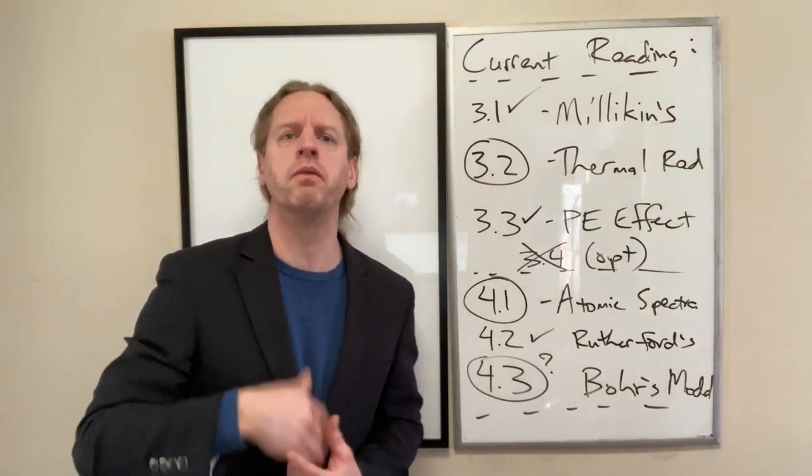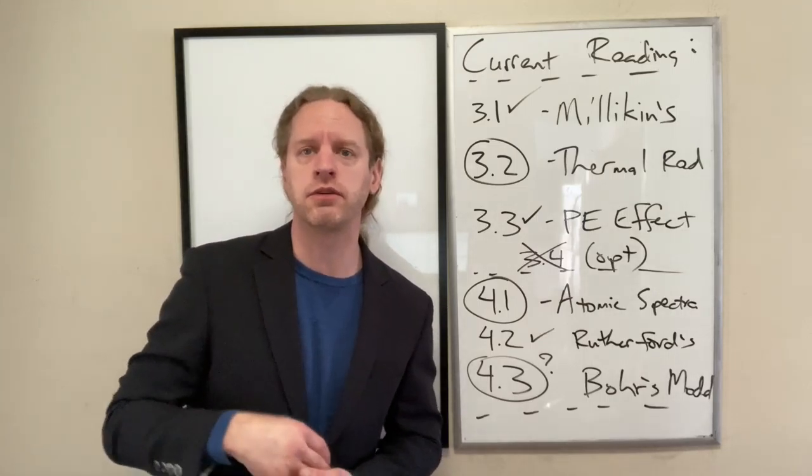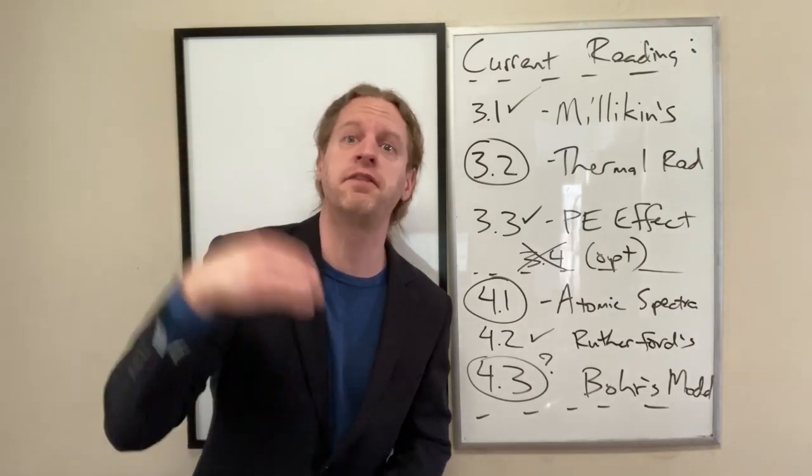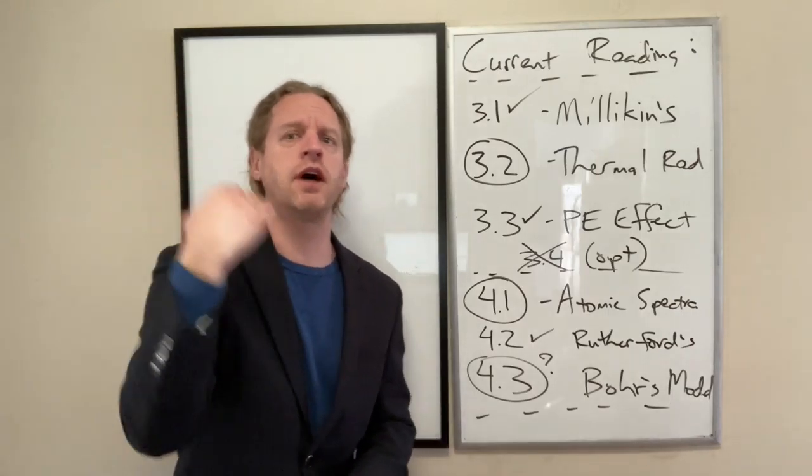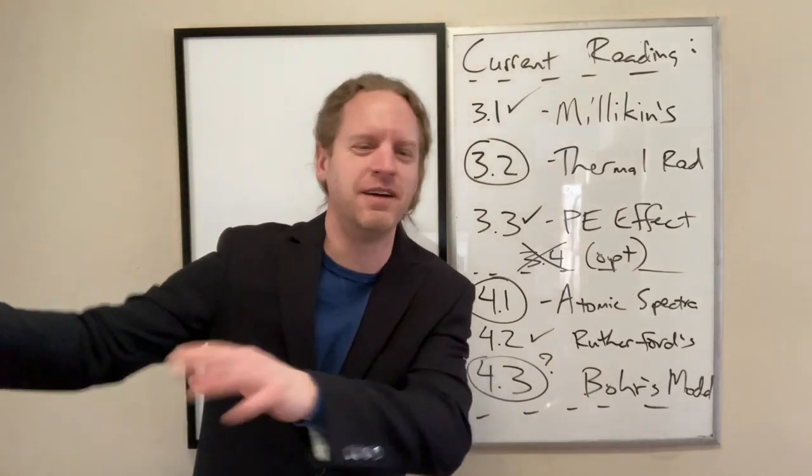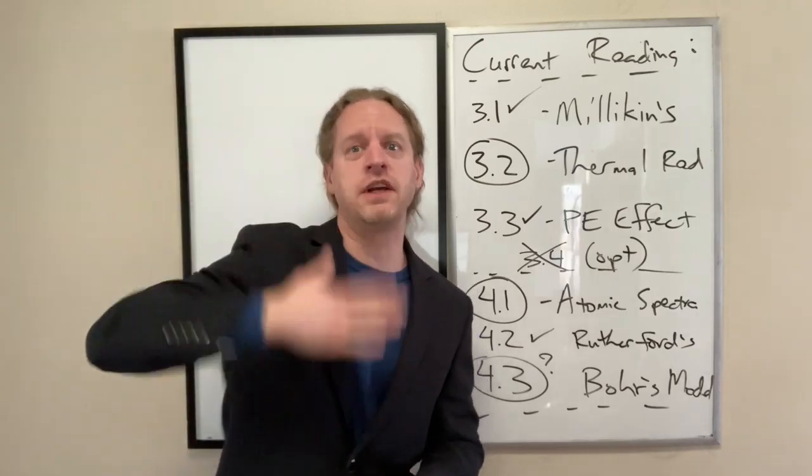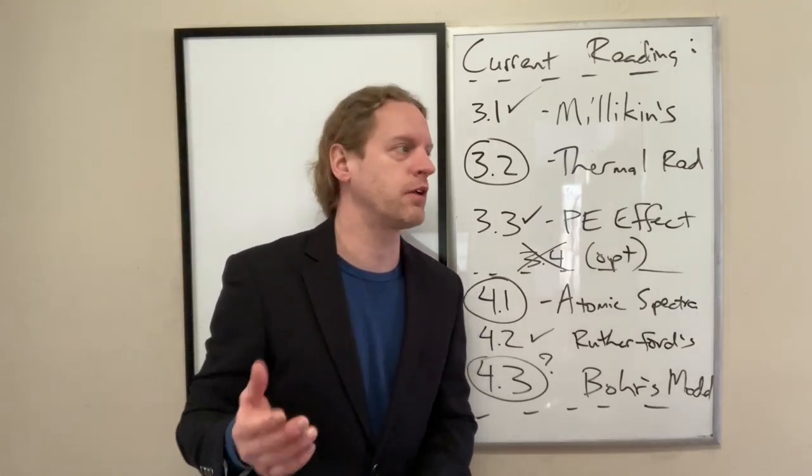So we're going to finish up our talk about the four types of atomic spectra. Last time we went through continuous, including the subset of thermal radiation. And we also talked about reflection spectra, which are really the null subset, the one that doesn't really matter. It's just whatever's incident minus absorbed, I should say.